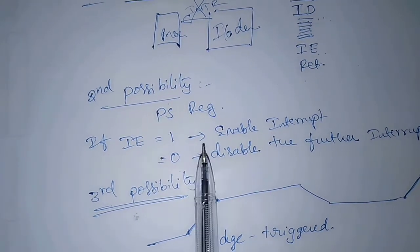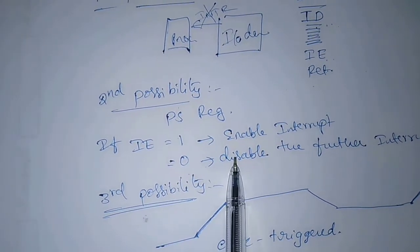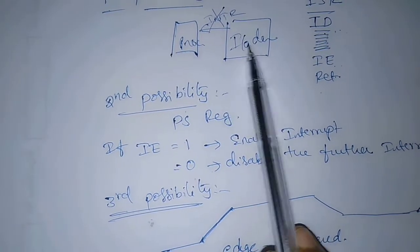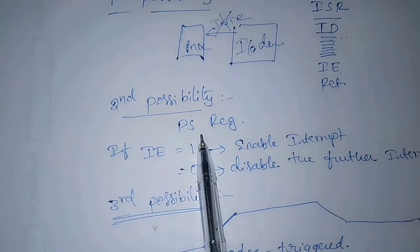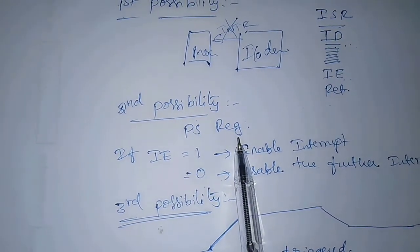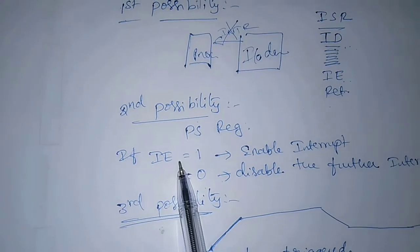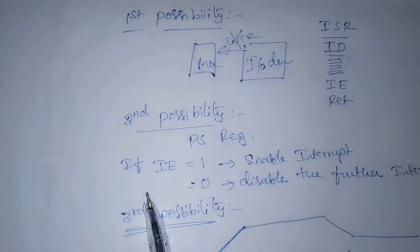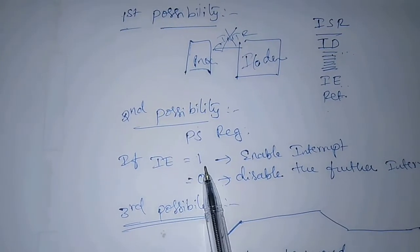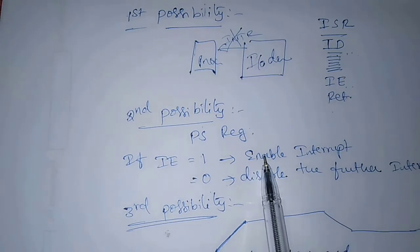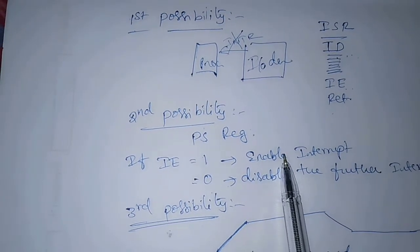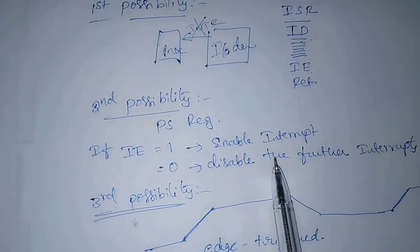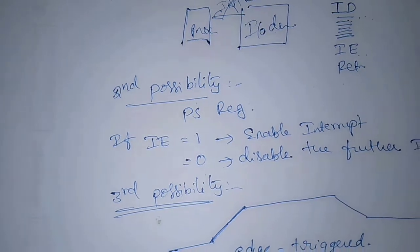Coming to the second possibility, processor automatically disable interrupts before starting the execution of the ISR. In this case, one bit in program status register called interrupt enable, which indicates whether interrupts are enabled or disabled. So here, if interrupt enable is equal to 1, interrupt request received. That means, enable interrupt. If it is 0, disable the further interrupts.